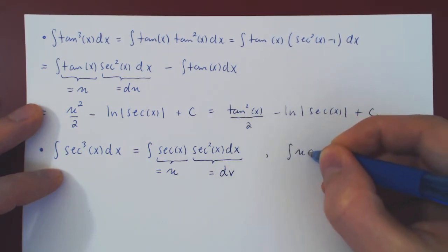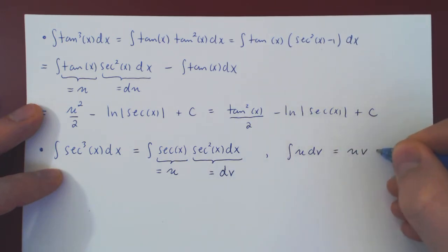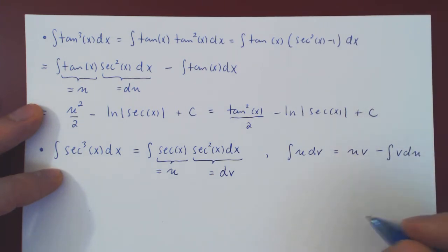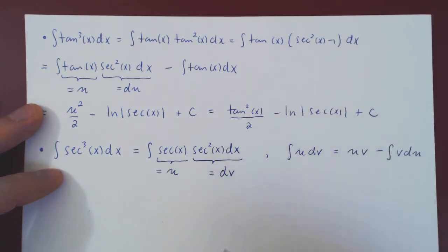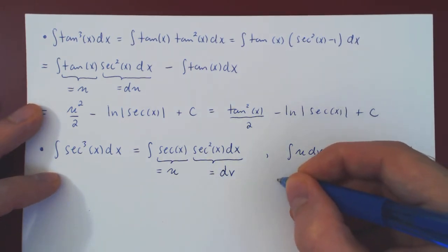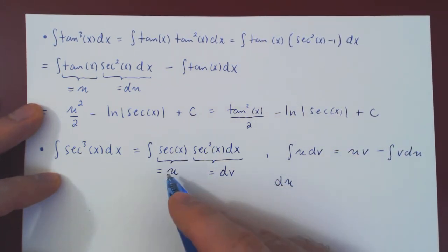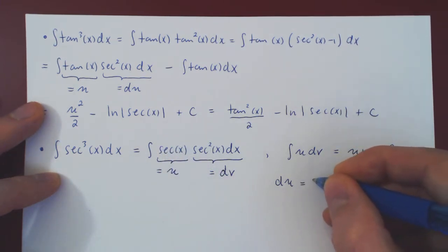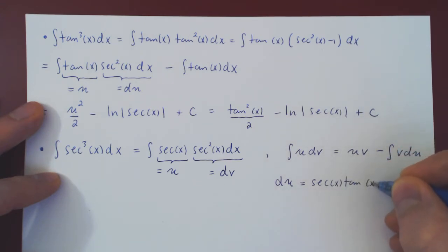Integration by parts states that the integral of u dv equals uv minus the integral of v du. So we need to find our du and our v. du is quite easy: u is secant(x), so the differential of u will be the derivative of secant times dx. The derivative of secant is, of course, secant(x) tan(x) dx.